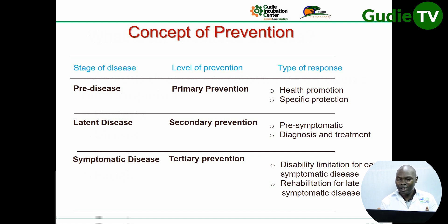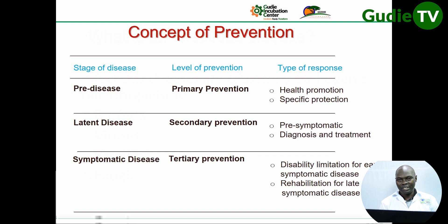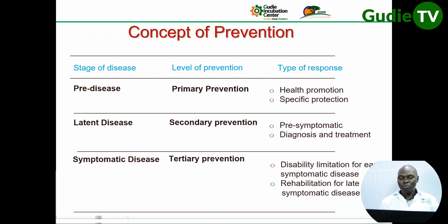The latent disease stage corresponds to secondary prevention, where the responses are pre-symptomatic diagnosis and treatment. Using COVID-19 as an example: the person has the disease — with or without symptoms — and upon testing, the disease is diagnosed. Treatment is then given. The symptomatic stage, which is tertiary prevention, follows when symptoms are fully present.